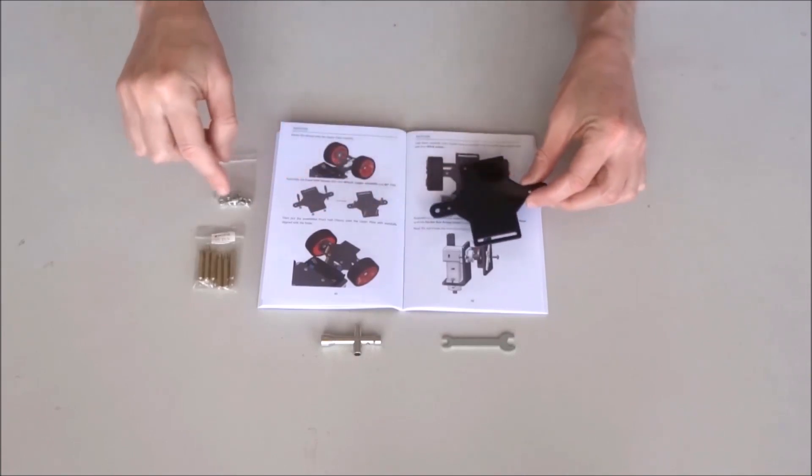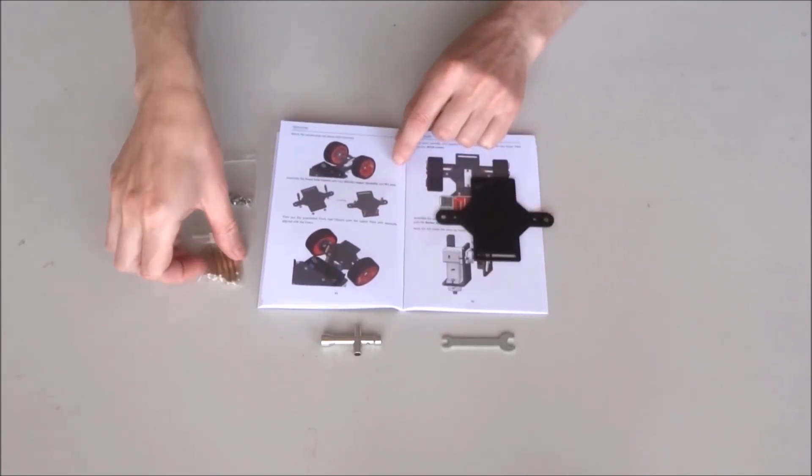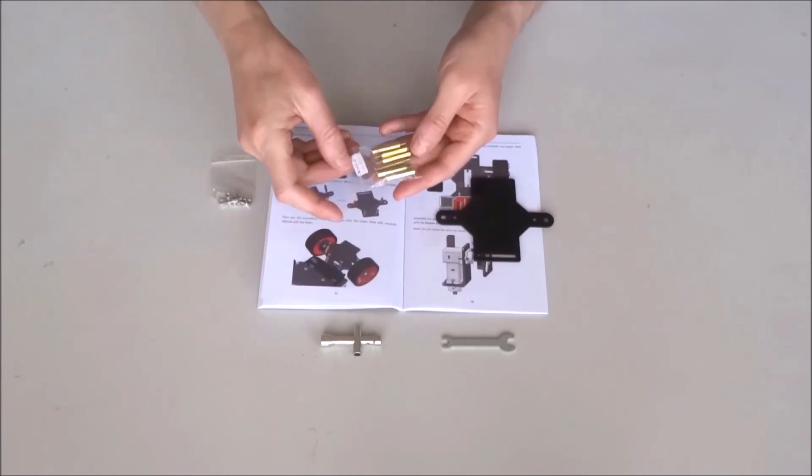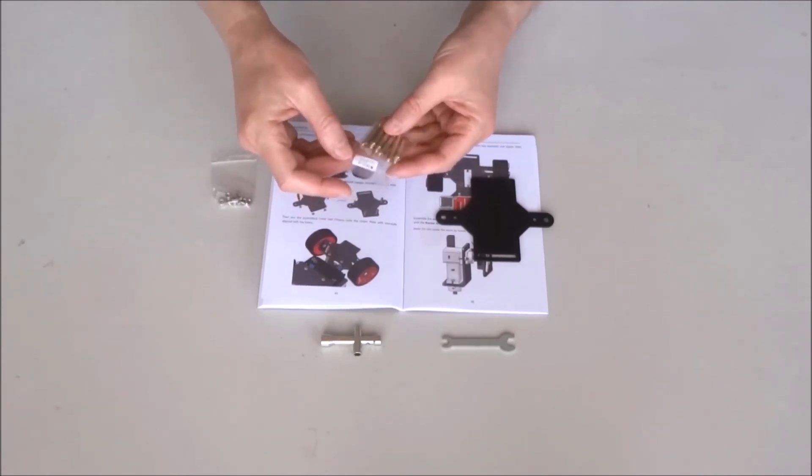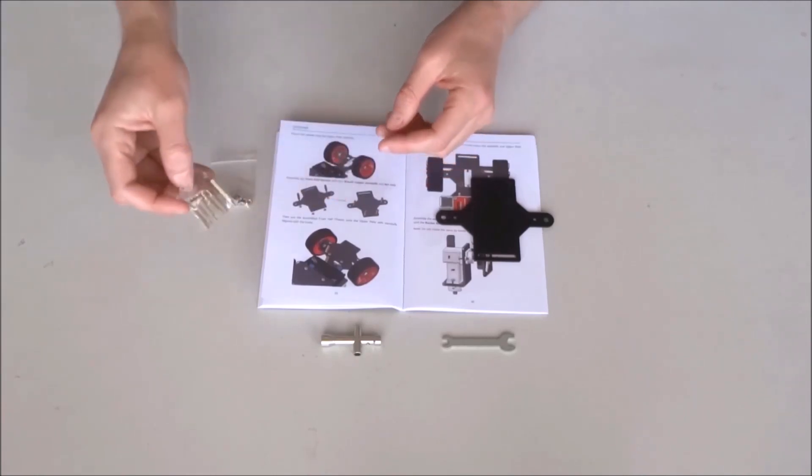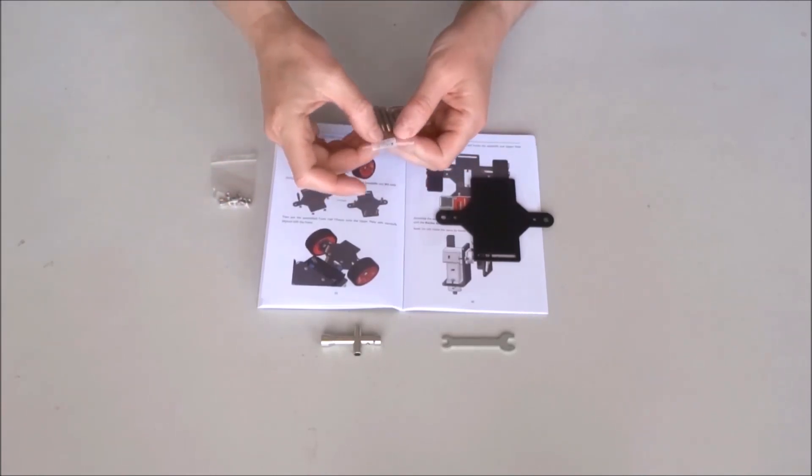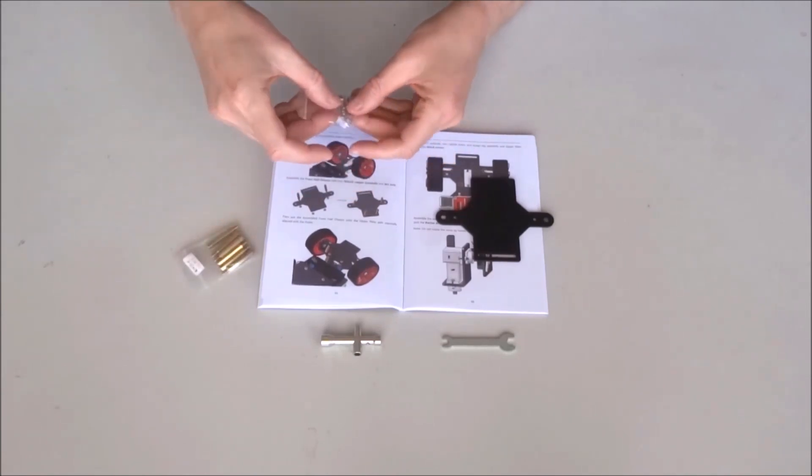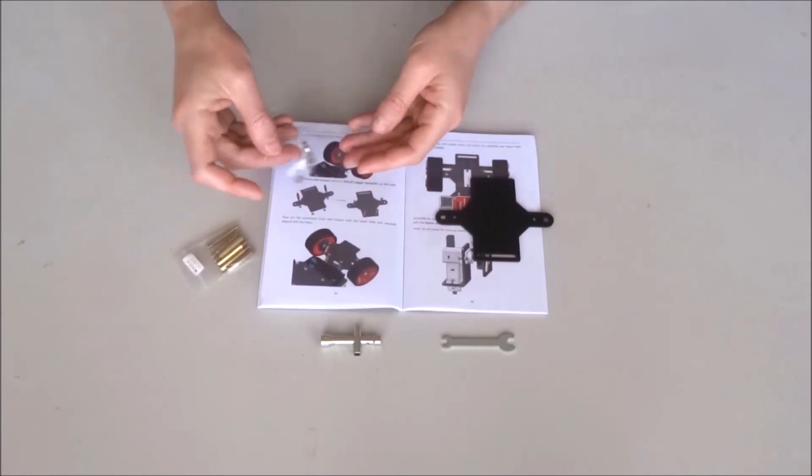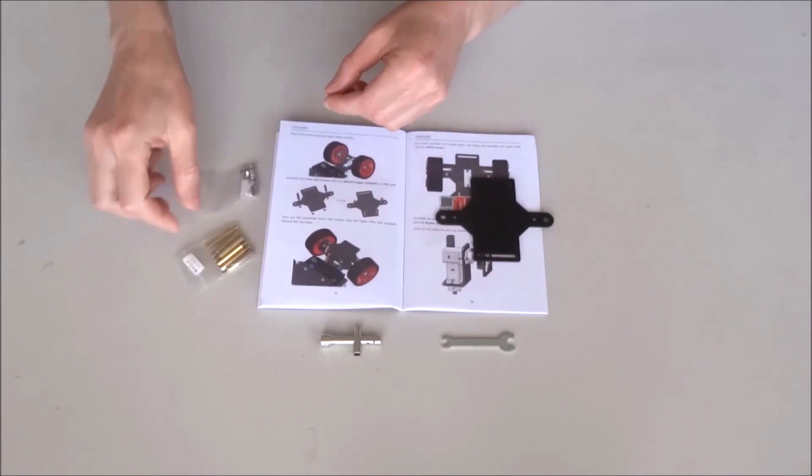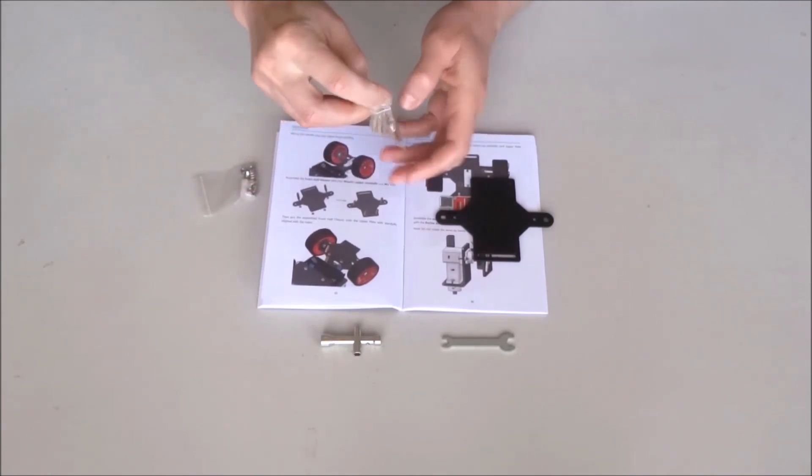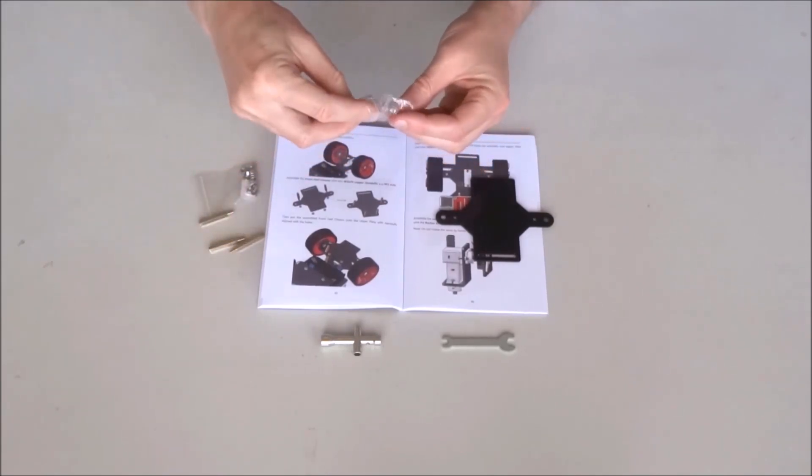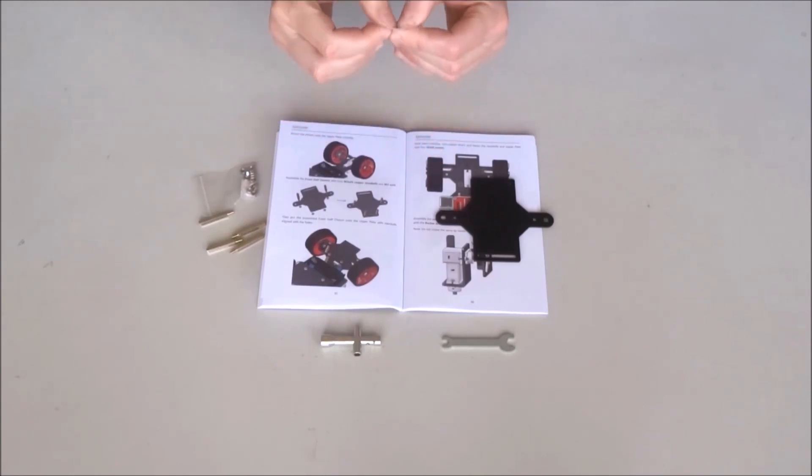This is four of these brass standoffs, there are M3 by 25 standoffs, and four M3 nuts for the standoffs. So go ahead, take out the standoffs, four of them, leave the rest aside. Take four nuts.